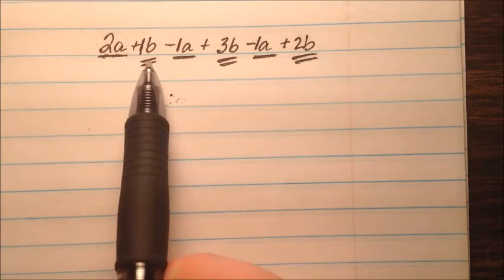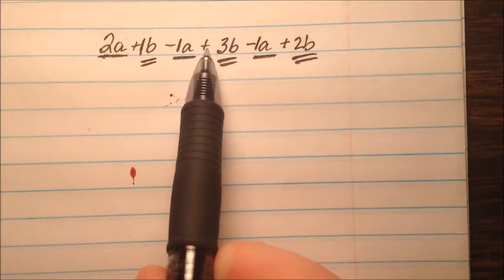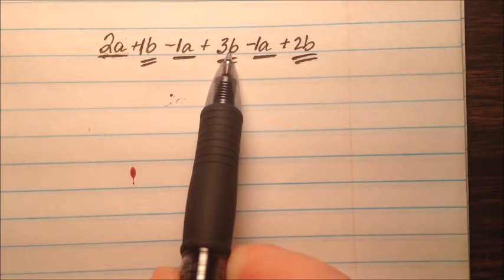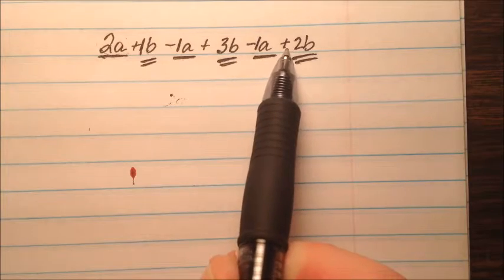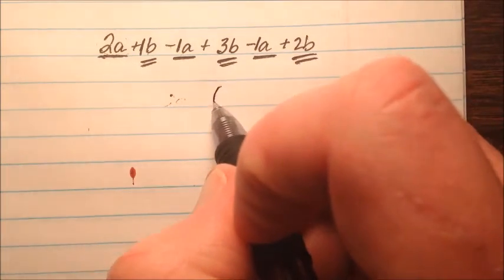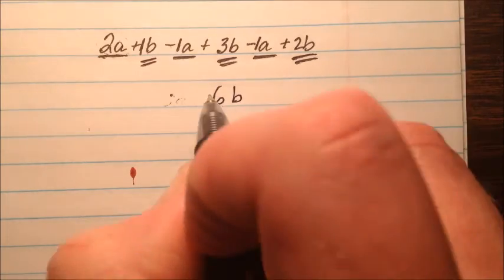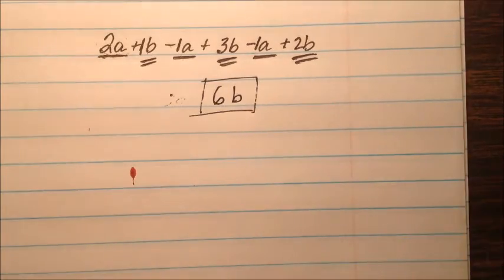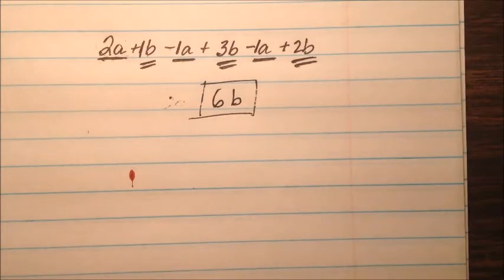My b's are the other ones. 1b plus 3b - one plus three is four - and then plus 2b is four plus two is six. So I have 6b for my answer for the final example when I combine those like terms. Just remember if all the coefficients cancel out and you have zero like we had with our a's, don't write anything down for your a's. Don't even list them there - there's nothing there.